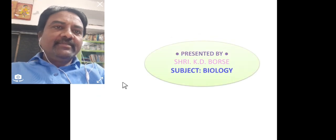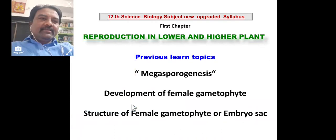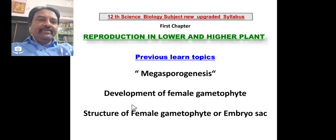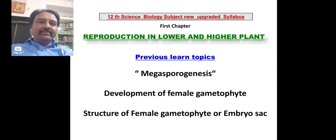In the last lecture, we covered concepts like megasporogenesis, development of female gametophyte, and structure of female gametophyte or embryo sac. Up to the last lecture, we completed the first topic of sexual reproduction. In sexual reproduction, two events take place: formation of gametes and fusion of gametes. So formation of gametes — that is, development of male gametophyte and development of female gametophyte — is now complete.